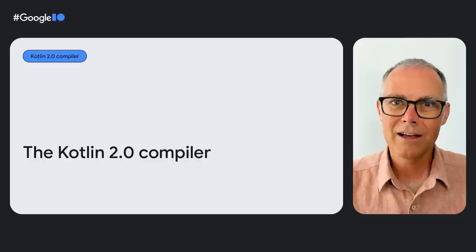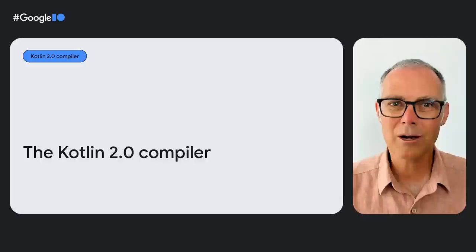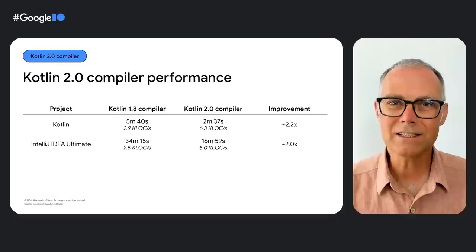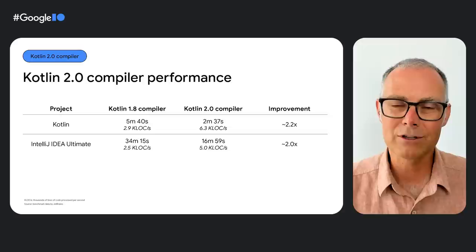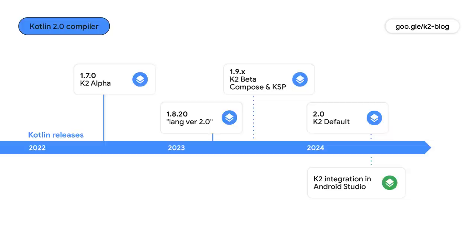JetBrains and Google have been rebuilding the Kotlin compiler to enable better build and IDE performance. This new compiler, codenamed K2, will be the default compiler in Kotlin 2.0. Compilation speed with Kotlin 2.0 is up to twice as fast as the current Kotlin compiler, and the new compiler will also enable more Kotlin language feature advancements in the future. We are very excited about the new Kotlin compiler and hope that it'll enable even higher developer productivity in Kotlin.